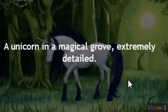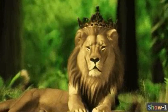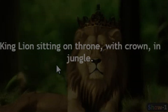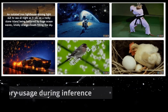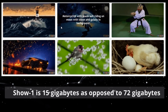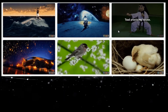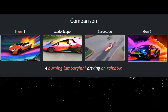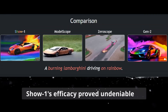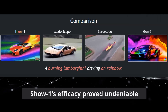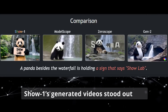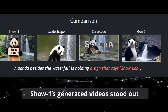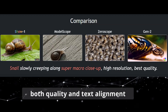Moreover, it achieves this with just a fraction of the computational overhead when benchmarked against conventional pixel-based VDMs. For example, GPU memory usage during inference with ShowOne is 15GB as opposed to 72GB. In fact, upon rigorous benchmarking against standalone methods, ShowOne's efficacy proved undeniable. In comparative assessments with purely latent VDMs, ShowOne's generated videos stood out in both quality and text alignment.